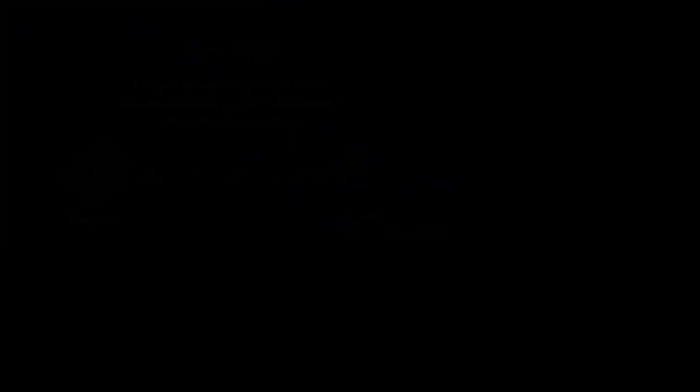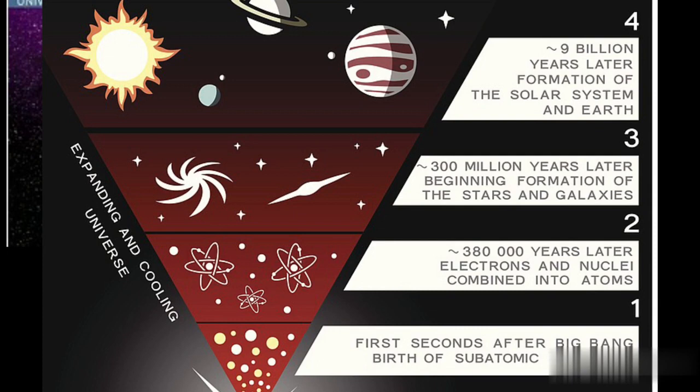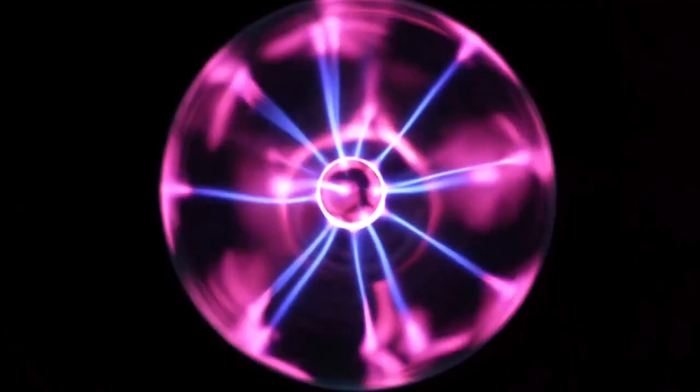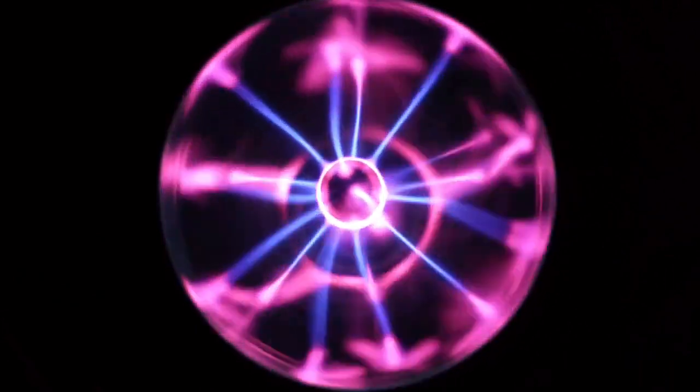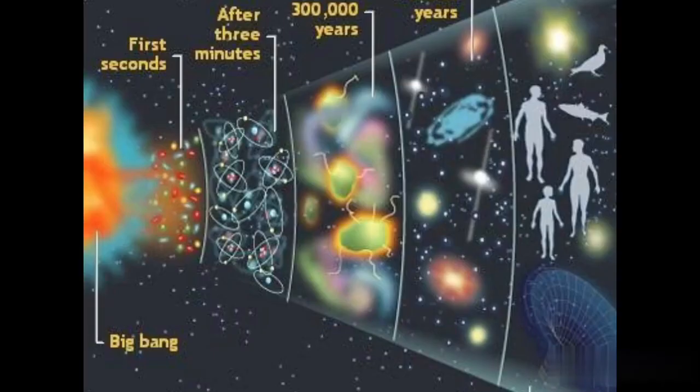Observational evidence: Over the years, observational evidence has accumulated to support the Big Bang Theory. Scientists have studied the cosmic microwave background radiation, which is a faint glow permeating the universe. This radiation is considered a remnant of the early stages of the Big Bang and provides crucial evidence supporting the theory.